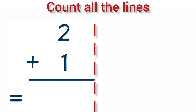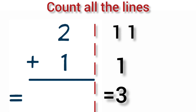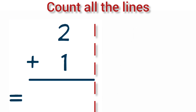Add 2 plus 1. 2 lines plus 1 line is equal to 3. So, 2 plus 1 is equal to 3.